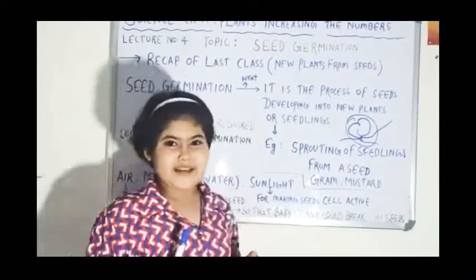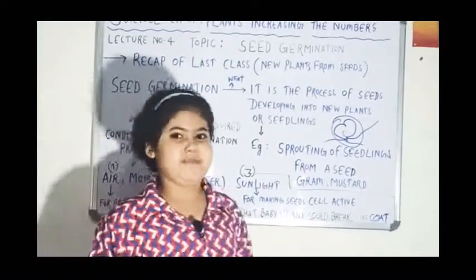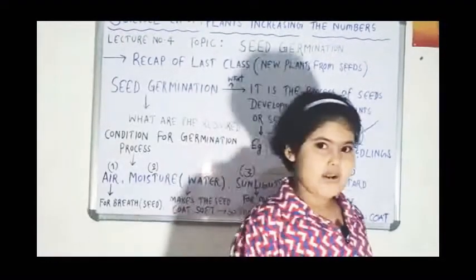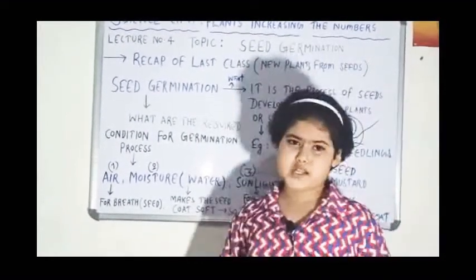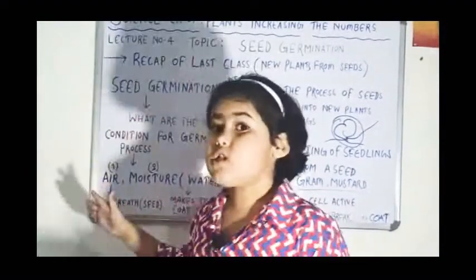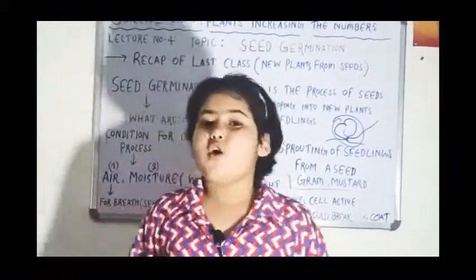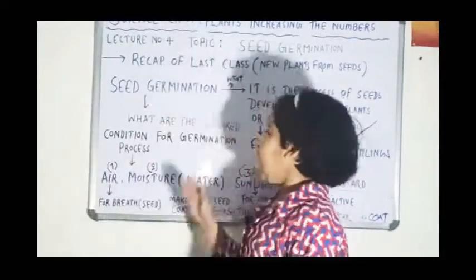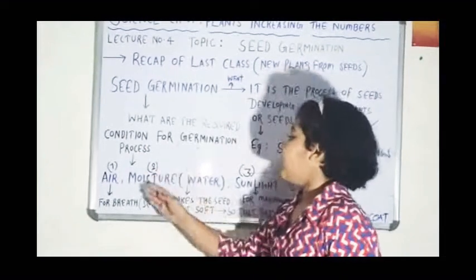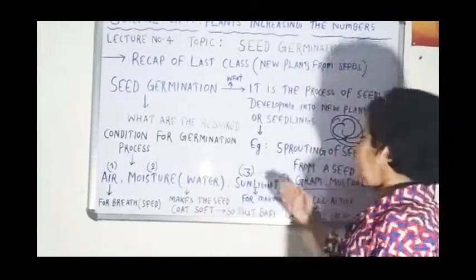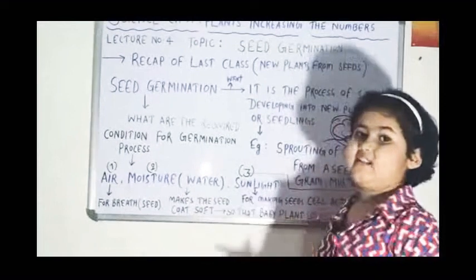This process is known as seed germination. Now, what are the required conditions for the seed germination process? This question is very important for exams. The conditions are: first, air; second, moisture or water; and third, sunlight.